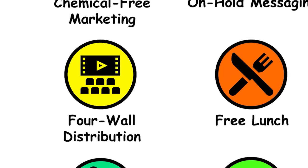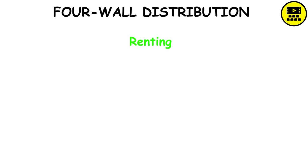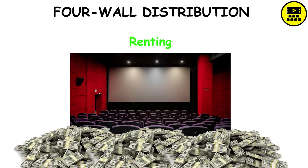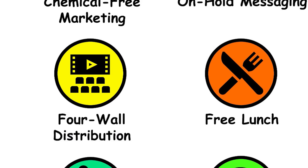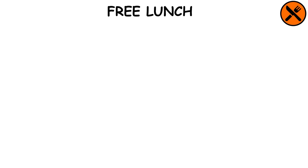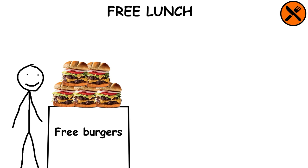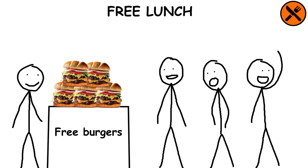Four Wall Distribution: Involves renting movie theaters to receive all box office revenue, a practice common in the U.S. film industry during the late 1960s and 1970s. Free Lunch: A meal provided at no cost, often as a sales enticement to attract customers and increase overall business revenue.